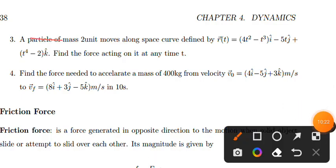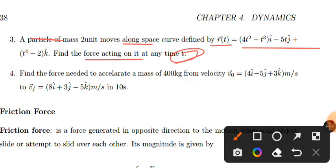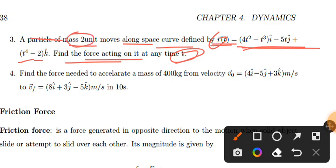A particle of mass 2 units moves along a space curve defined by r(t) = t² i - 5t j + (t⁴ - 2t) k. Find the force acting on it at any time t.